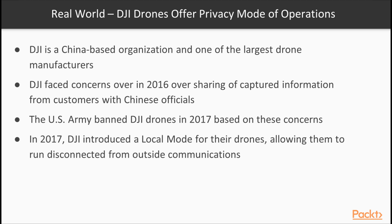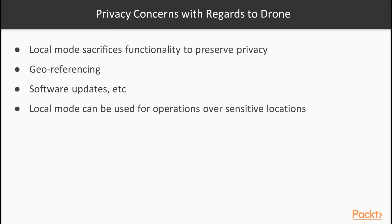Taking the concept of not knowing who your device is talking to to the extreme, we can look at the case of DJI. DJI is a China-based organization and one of the largest drone manufacturers. In 2016, DJI came under fire over concerns of sharing information collected from customers with Chinese officials. In response, the US Army banned the use of DJI drones. DJI responded by introducing a new local mode for their drones, which cuts off all communications, allowing them to run disconnected from the outside world. However, local mode also reduces the ability of the drone platform — for example, features such as geofencing are restricted when operating in local mode.